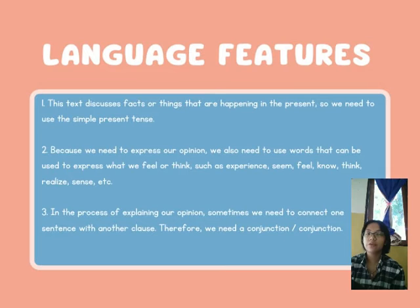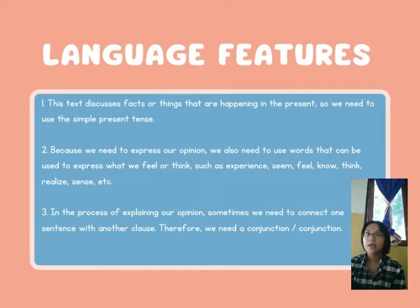Language features of the analytical exposition text. First, this text presents present facts or things, so we need to use simple present tense. Second, because we need to express our opinion — what we feel or think — we use mental process verbs like experience, seem, feel, know.